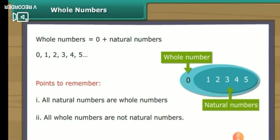Dear students, look at the picture. The picture shows all numbers. The natural numbers are 1, 2, 3, 4, 5 and so on. If you add natural numbers to zero, then these numbers become whole numbers. So in this picture, 0, 1, 2, 3, 4, 5 represents whole numbers. Therefore, whole numbers equals zero plus natural numbers.